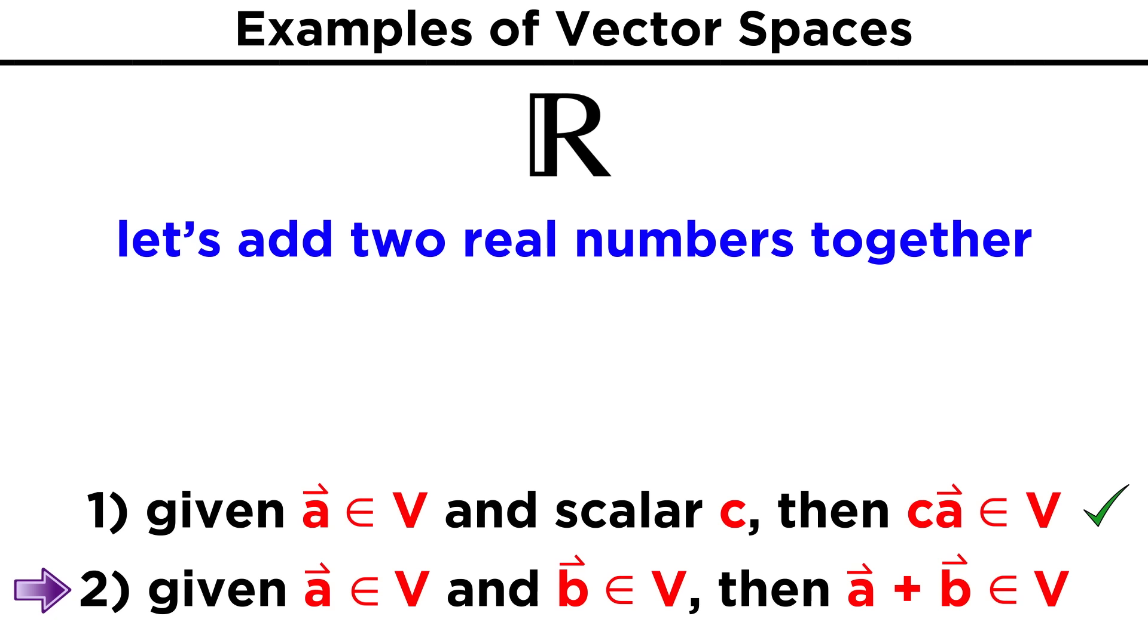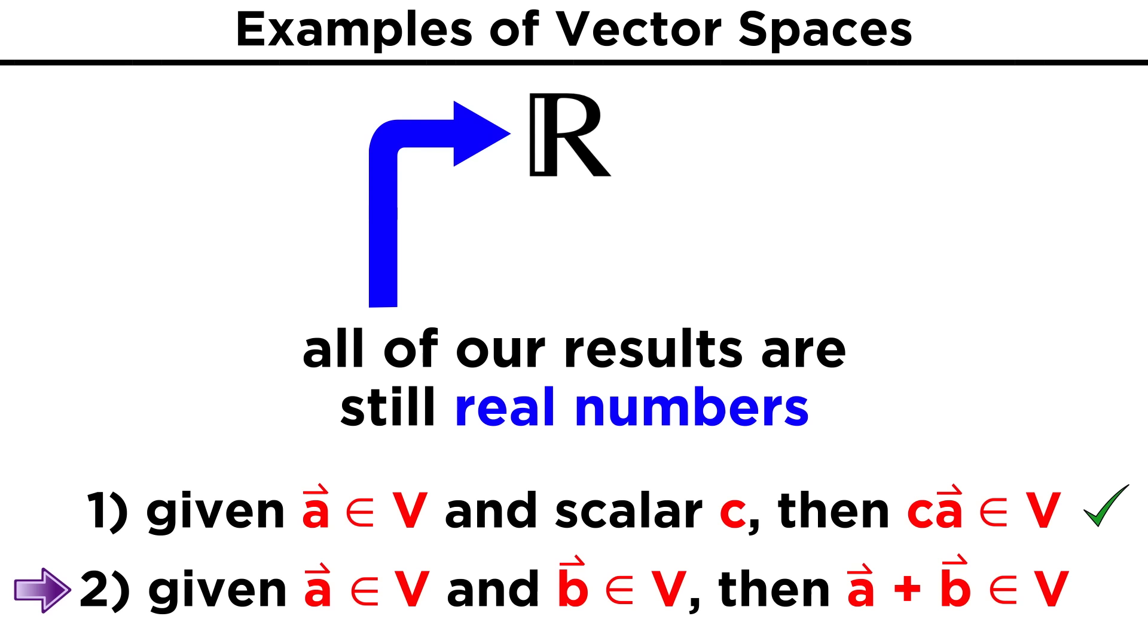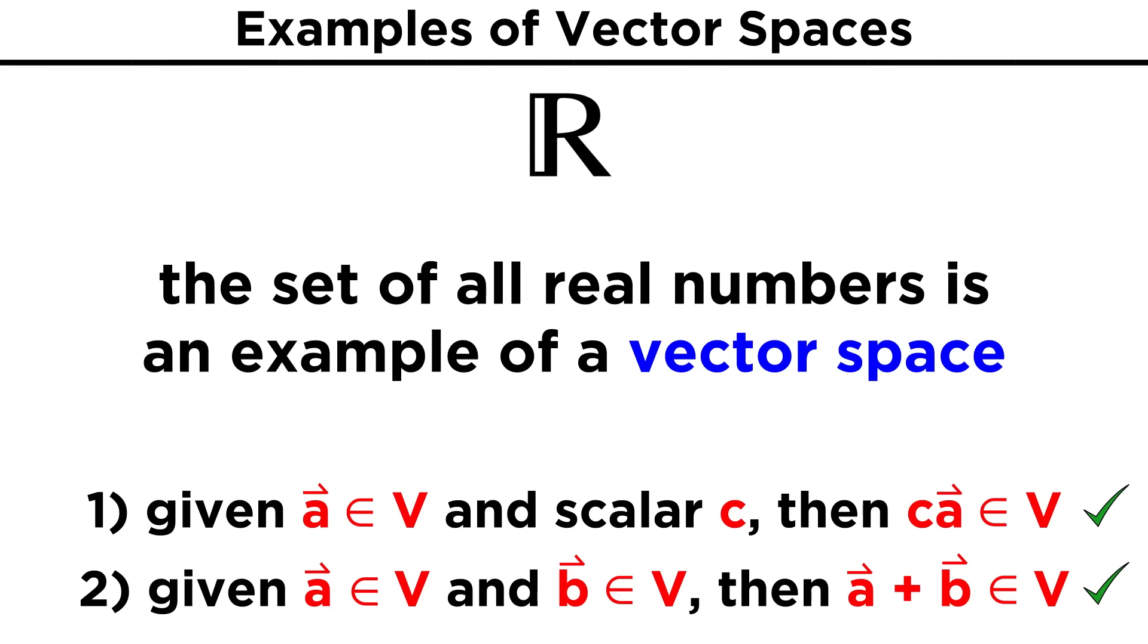Now for the second property, we will need to choose two elements to add together. We could choose seventy-four and negative ten, adding them together to get sixty-four. Adding two and four-fifths gives us fourteen-fifths. No matter what two real numbers we choose, the sum of two real numbers is still real, so because the two criteria have been met, the set of real numbers is closed and can be considered a vector space.